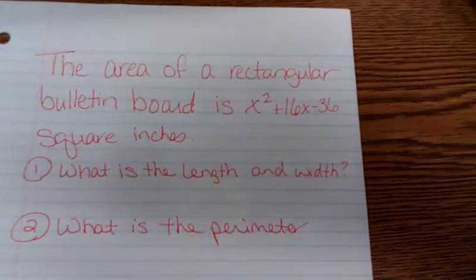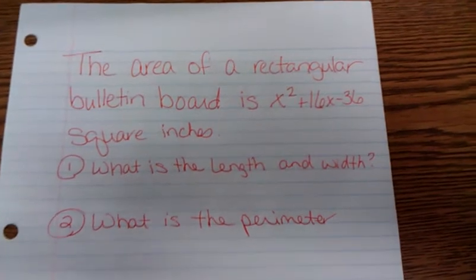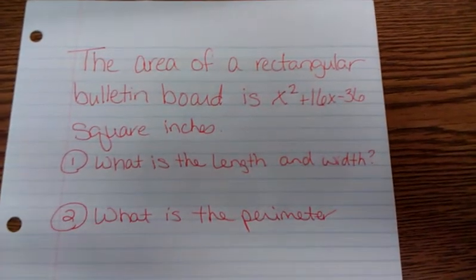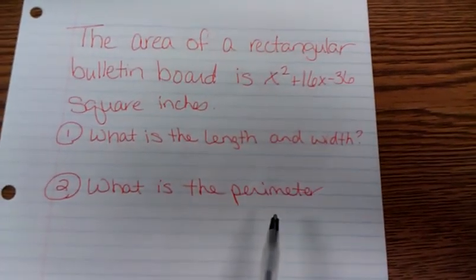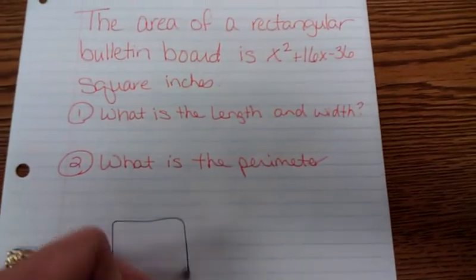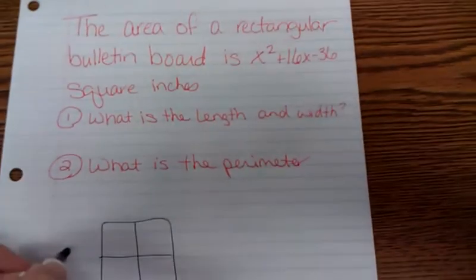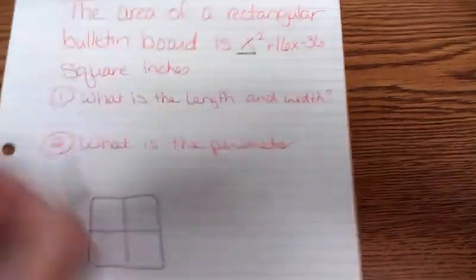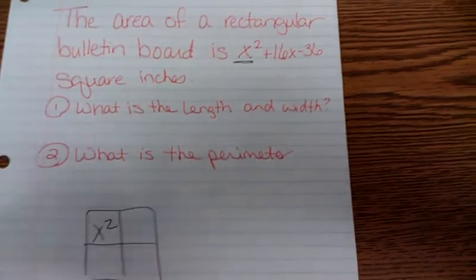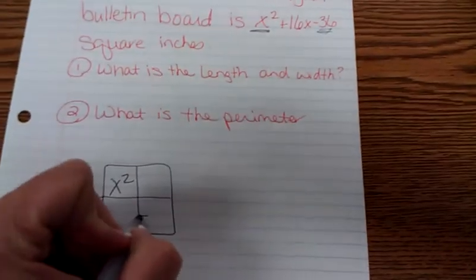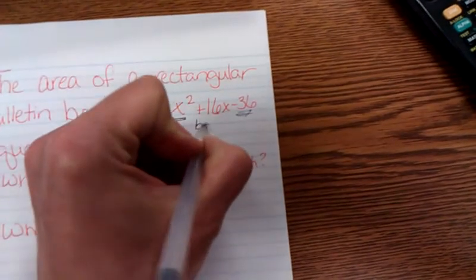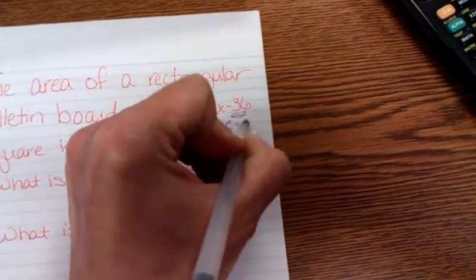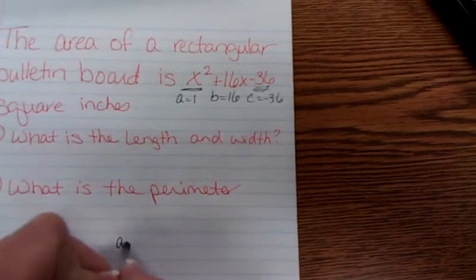Now, the other type of problems that we've had before is the area of a rectangular bulletin is x squared plus 16x minus 36 square inches. They want you to find the length and the width. And then, what is the perimeter? Well, to find the length and the width, we need to do the box. And we need to factor. I know that x squared goes here in the top corner. I know negative 36 goes down here in the bottom left. Then, I have something x and something x. Well, a is 1, b is 16, c is negative 36.